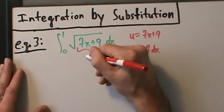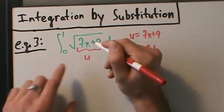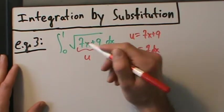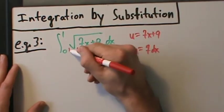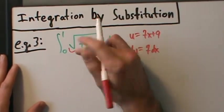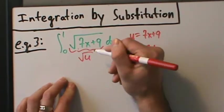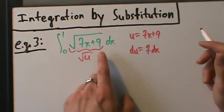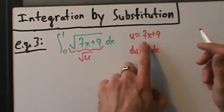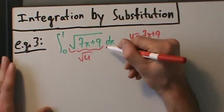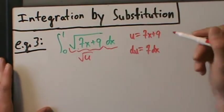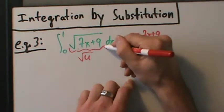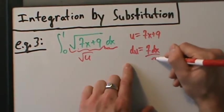So 7x + 9 becomes u, and this whole thing — the square root of 7x + 9 — becomes the square root of u, because 7x + 9 is u. That's the substitution we made. And what about the dx?